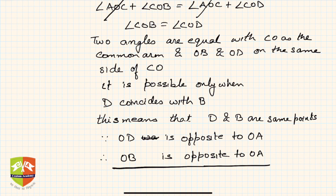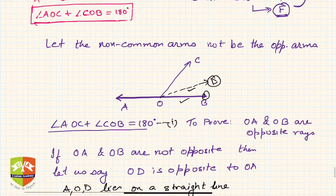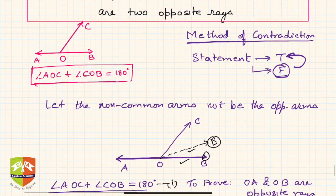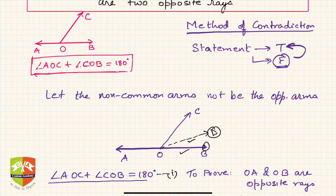This is the proof of the converse of the theorem, which says that if the sum of two adjacent angles is 180 degrees, then their non-common arms are two opposite rays. We proved this using the method of contradiction — please keep this method in mind.